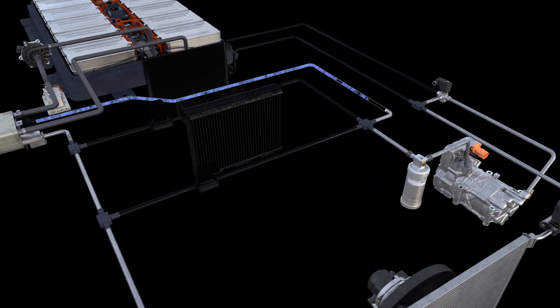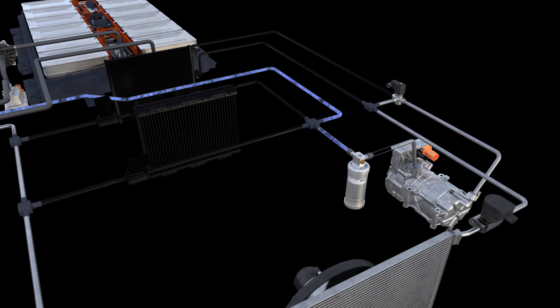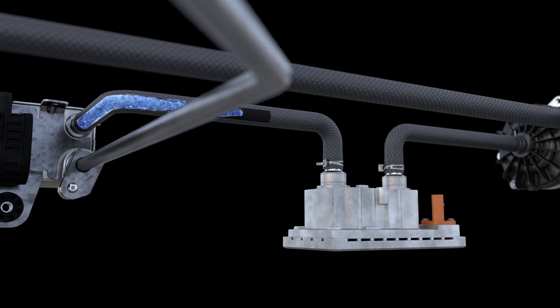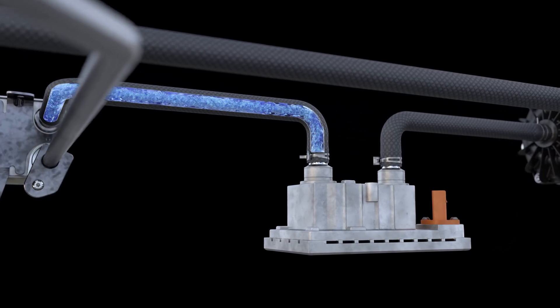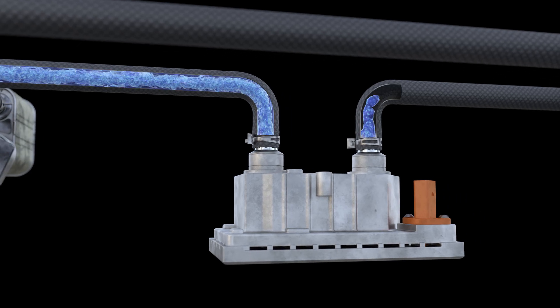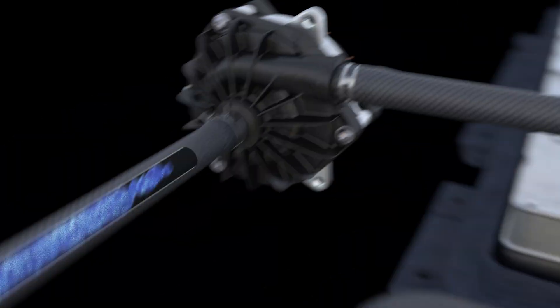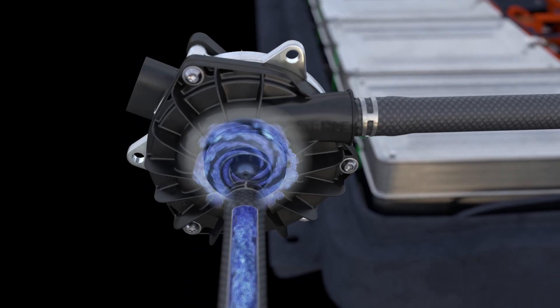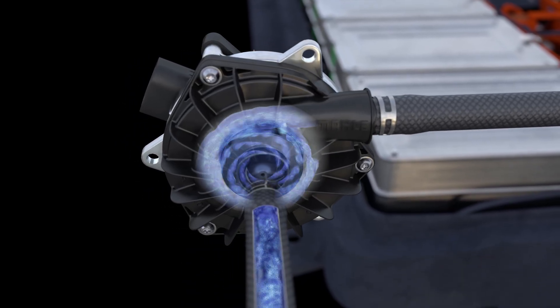The refrigerant returns from the chiller to the low pressure connection of the air conditioning compressor. Of course, the battery may also need to be heated instead of cooled. This is where the high voltage heater comes into play. The coolant pump keeps the battery cooling system going. This pump is also electrically driven, of course.